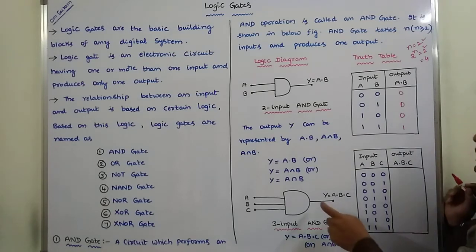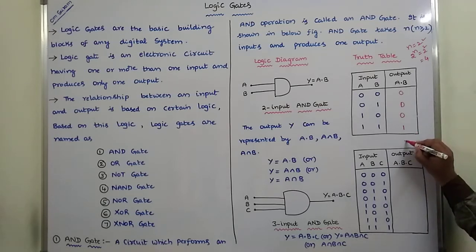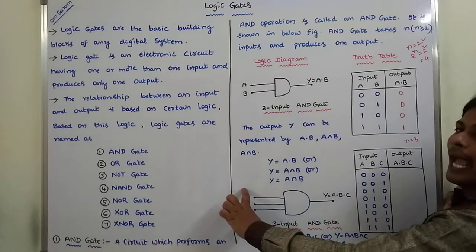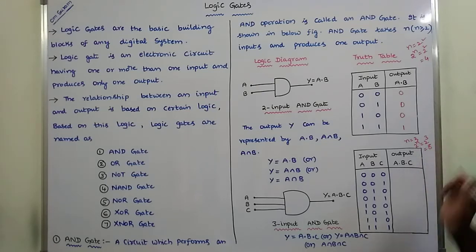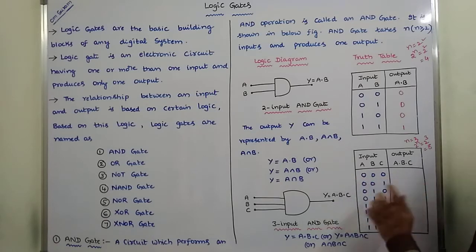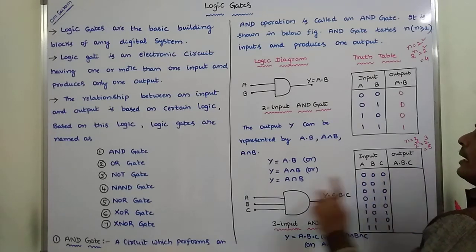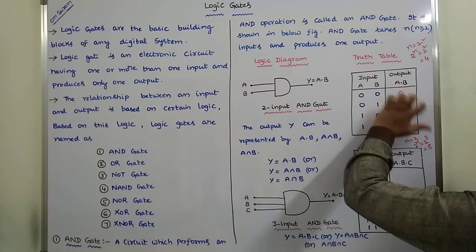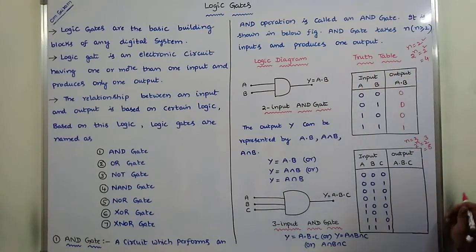Next, we go to the 3-input AND gate. Here n equals 3 because we apply 3 inputs. The number of input combinations is 2 power 3 = 8 combinations, ranging from 0,0,0 to 1,1,1. The inputs are A, B, C and the output is Y.